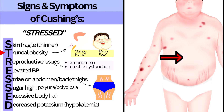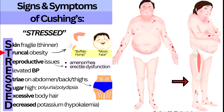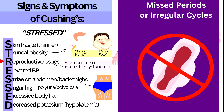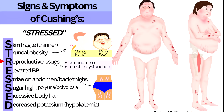T is for Truncal obesity: too much cortisol affects how the body processes and stores fats, along with appetite and glucose management. Fat accumulates in central parts of the body — the trunk, abdomen, and upper back — leading to the term 'buffalo hump' for fat on the back or 'moon face' for fat in the face, while the extremities remain thin due to muscle wasting from altered protein metabolism. R is for Reproductive issues: the person may have irregular or absent periods, infertility, or erectile dysfunction due to alterations in how glands release estrogen, testosterone, progesterone, LH, or FSH.